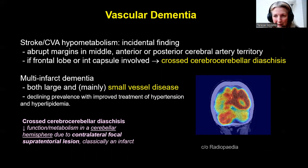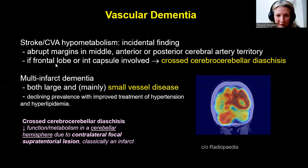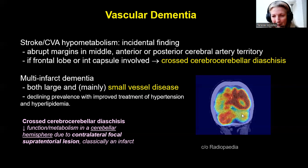Moving on to vascular dementias, which can be due to small and large vessel disease. For small vessel disease, PET is not particularly useful; this is usually picked up on MRI, and prevalence is declining due to improved treatment for hypertension and hyperlipidemia. On PET we see areas of hypometabolism corresponding to strokes, with low density on the CT component. If there's an infarct affecting the frontal lobe or internal capsule, you get something called crossed cerebellar diaschisis, meaning the contralateral cerebellum shows hypometabolism.